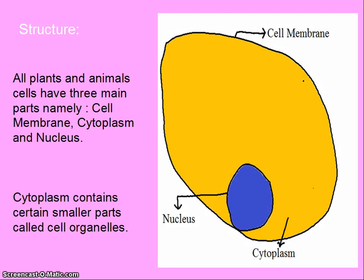Structure. All plant and animal cells have three main parts called cell membrane, cytoplasm, and nucleus. Cytoplasm contains certain smaller parts called cell organelles.